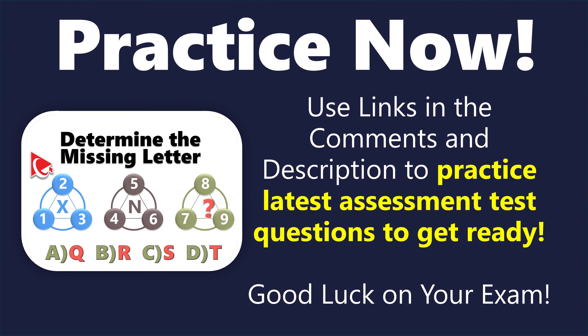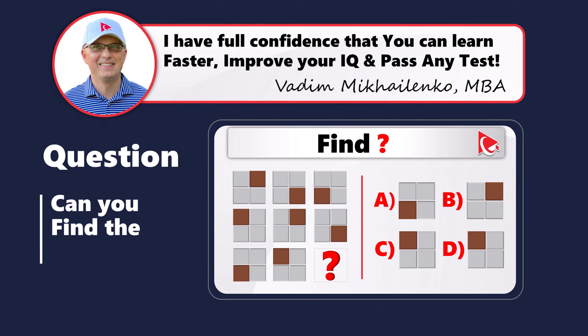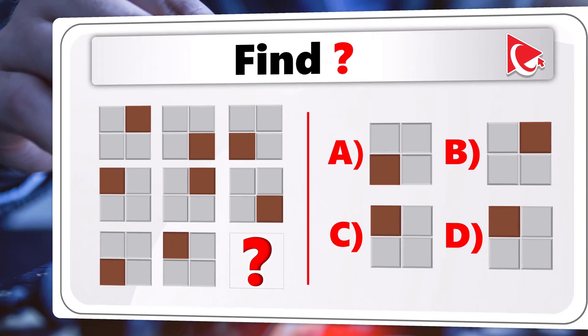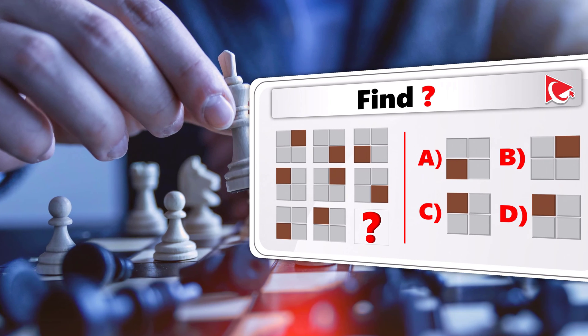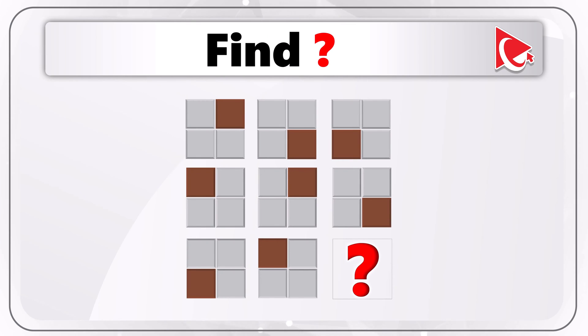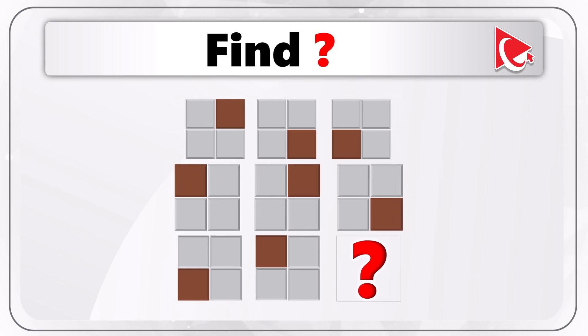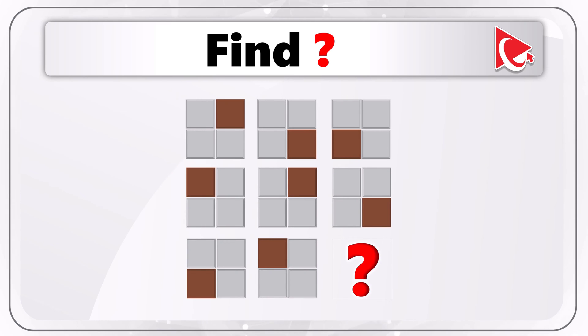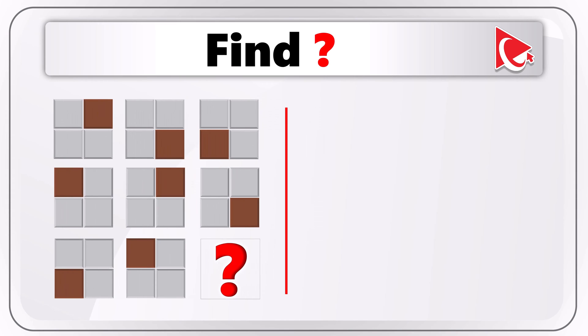And now you can challenge yourself with this puzzling assessment test question by keeping in mind, though, that the process of finding the answer sharpens your ability to strategize and devise efficient solutions. You're presented with a 3x3 matrix. The matrix consists of large squares, and each large square has four small squares.